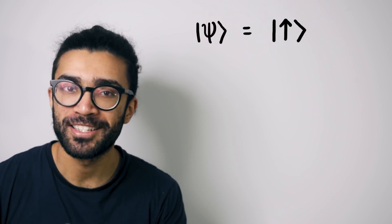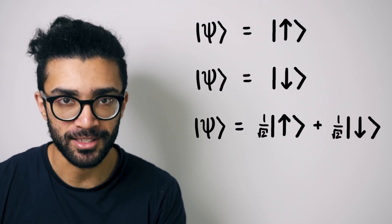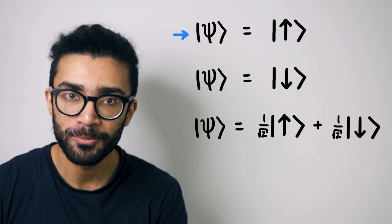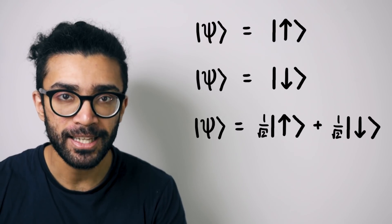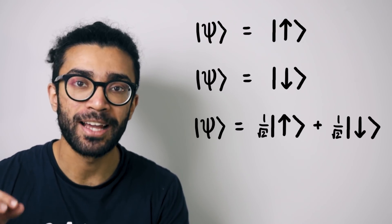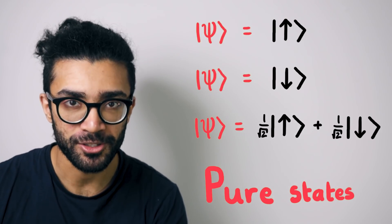So these are different ways in which we can write the wave function of our electron depending on its spin state. We can write it as spin up, or as spin down, or as some combination of the two. All of these wave functions that we've written here are representing what are known as pure quantum states. And they can be written as a single wave function.